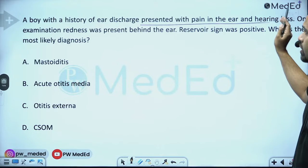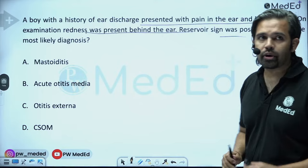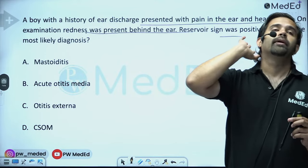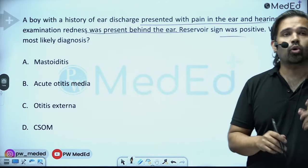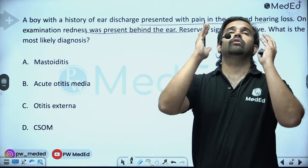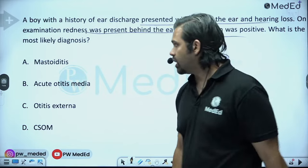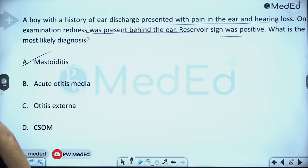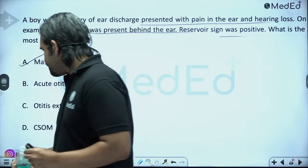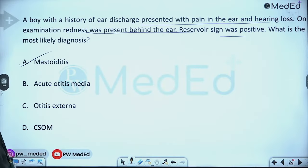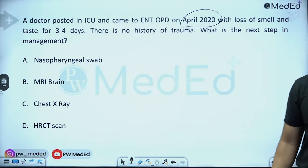A patient with ear discharge, ear pain, hearing loss, and redness behind the ear — reservoir sign is positive. Reservoir sign: when the neck is tilted up, ear discharge stops; when brought down, it flows again. This is classical of mastoiditis. Reservoir sign is also seen in CSF rhinorrhea.